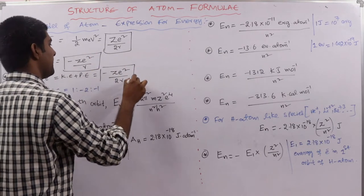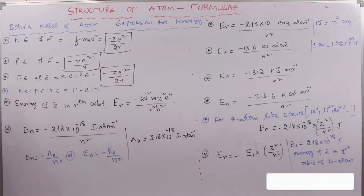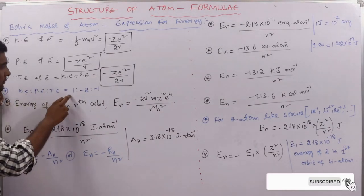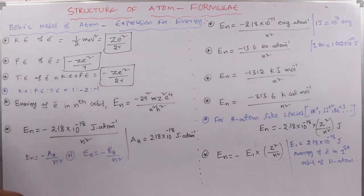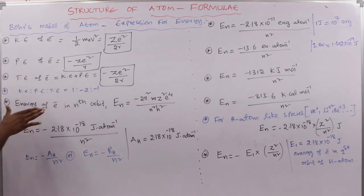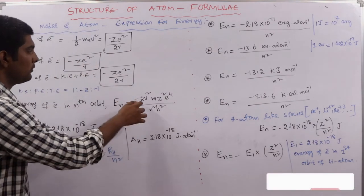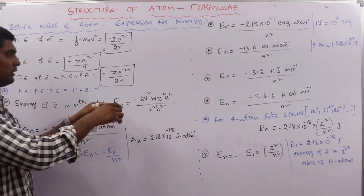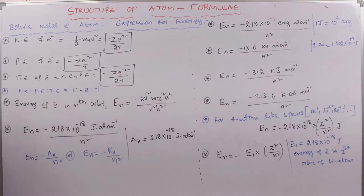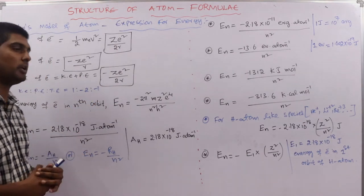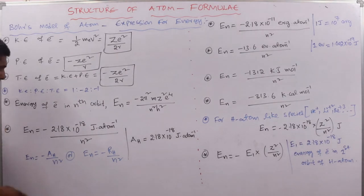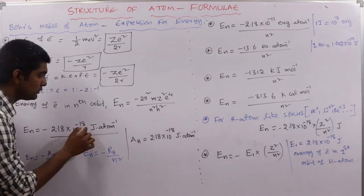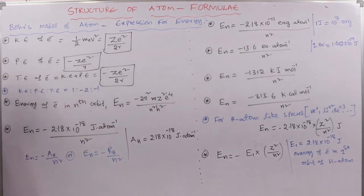The ratio of kinetic energy : potential energy : total energy = 1 : −2 : −1. The general expression for energy in the nth orbit is En = −2π²mZ²e⁴ / (n²h²). After substituting constants: En = −2.18 × 10⁻¹⁸ / n² joules per atom (for hydrogen, Z = 1).